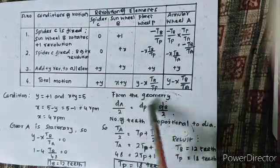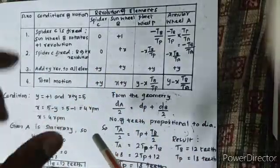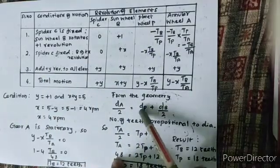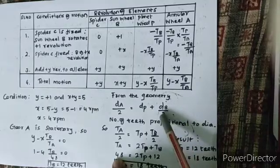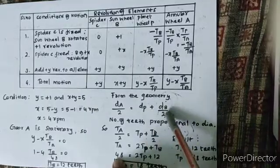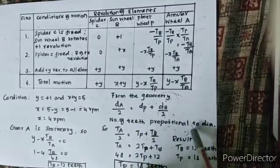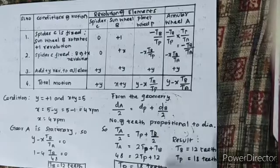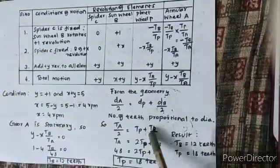From the geometry: diameter D and capital D, that is the pitch circle diameter. Diameter of A is proportional to teeth. So TA is equal to TP plus TP by 2.